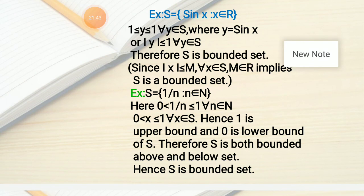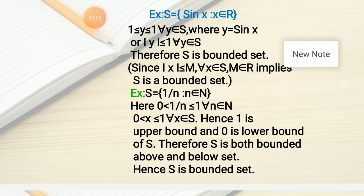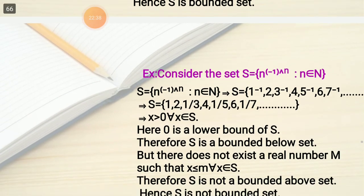Example: S = {sin x : x ∈ R}. We know that sin x lies between -1 and +1, so -1 ≤ y ≤ 1 for all y ∈ S, or equivalently |y| ≤ 1 for all y ∈ S. Therefore S is a bounded set. Another example: S = {1/n : n ∈ N}. Since 1/n > 0 and 1/n ≤ 1, we have 0 < X ≤ 1 for all X ∈ S. Hence 1 is an upper bound and 0 is a lower bound, so S is both bounded above and bounded below, hence S is bounded.